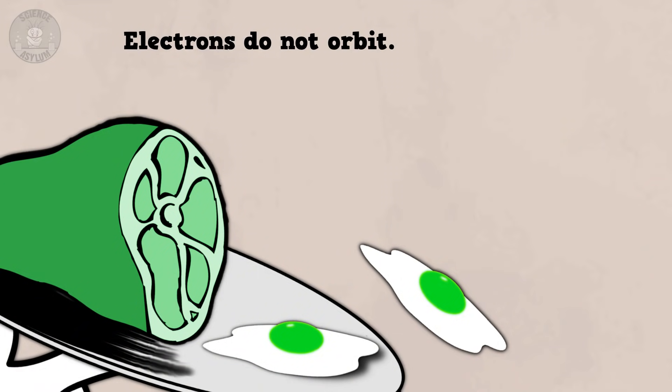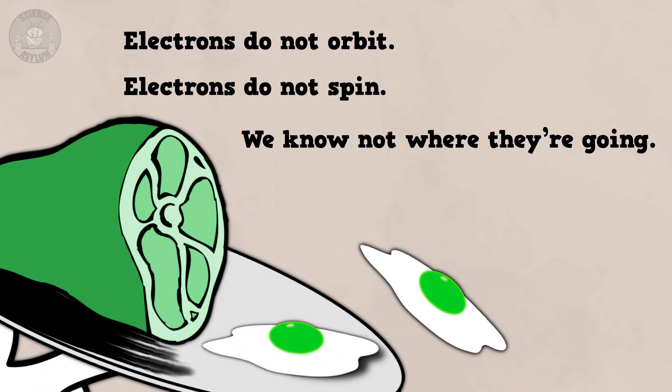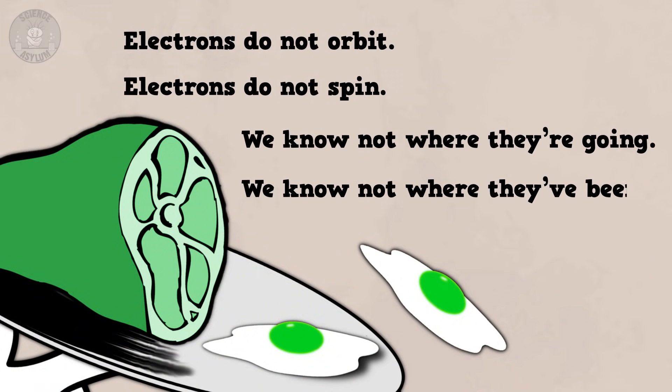What is angular momentum? Which I can answer, but honestly, it's not going to help you. Electrons do not orbit. Electrons do not spin. We know not where they're going. We know not where they've been.